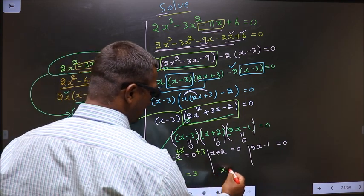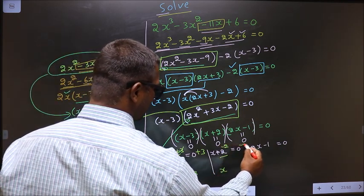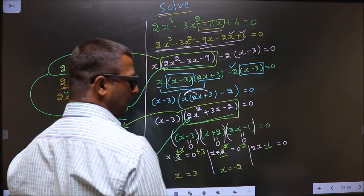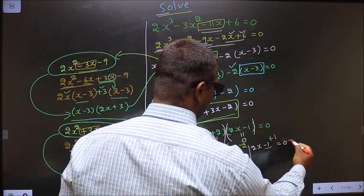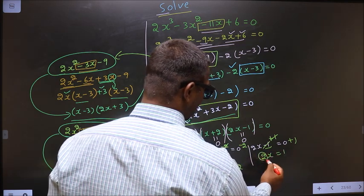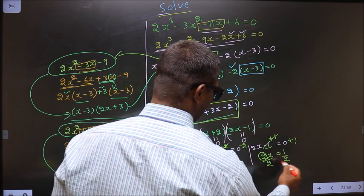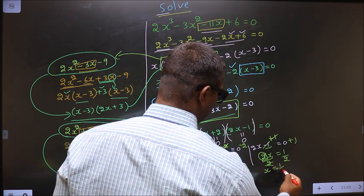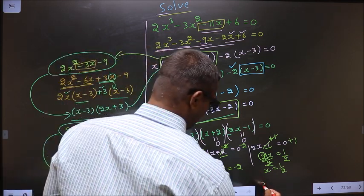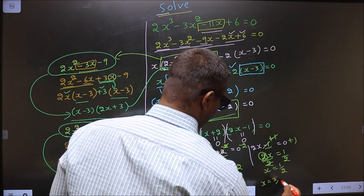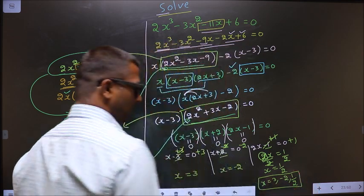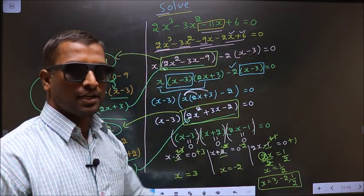Here to get x I should remove plus 2, so you subtract 2, giving x = minus 2. Here first I should remove minus 1, so you add 1, getting 2x = 1. Now you should remove 2, so you divide by 2, giving x = 1/2. So the values we got for x are x = 3, x = minus 2, and x = 1/2. This is our answer.